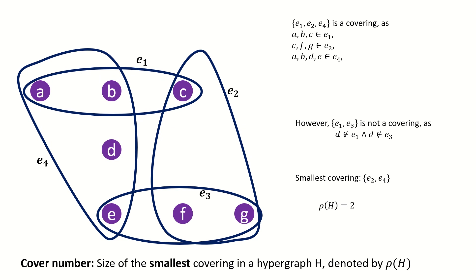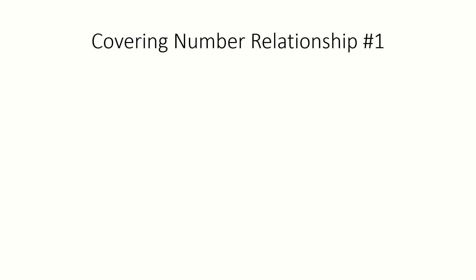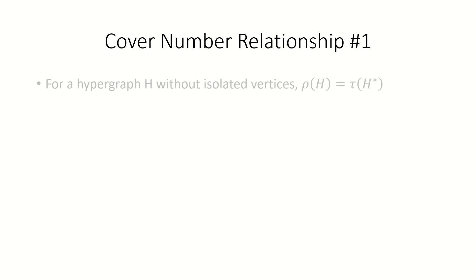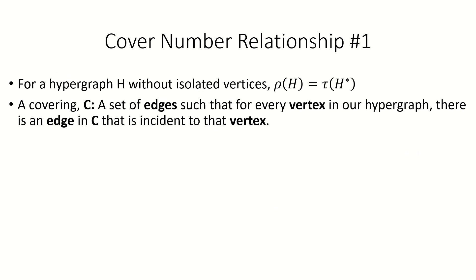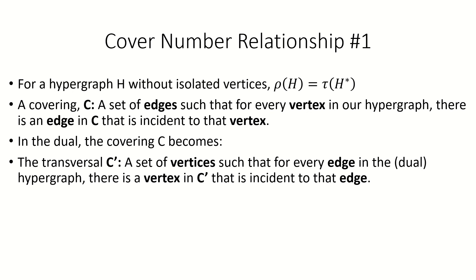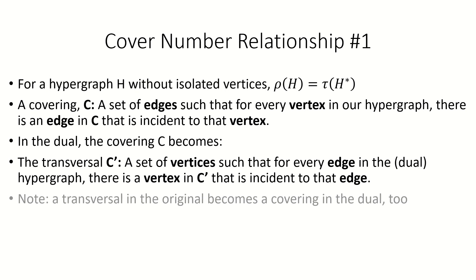To finish the video, let's look at two relationships between the cover number and the other parameters. First, for hypergraphs where coverings exist, the cover number of a hypergraph equals the transversal number of its dual. This is because a covering C in the original hypergraph — a set of edges such that for every vertex there's an incident edge in C — becomes, in the dual, a set C' of vertices such that for every edge in the dual there's a vertex in C' incident to that edge. Similarly, a transversal in the original hypergraph becomes a covering in the dual. Therefore, the size of the smallest covering in the original equals the size of the smallest transversal in the dual.